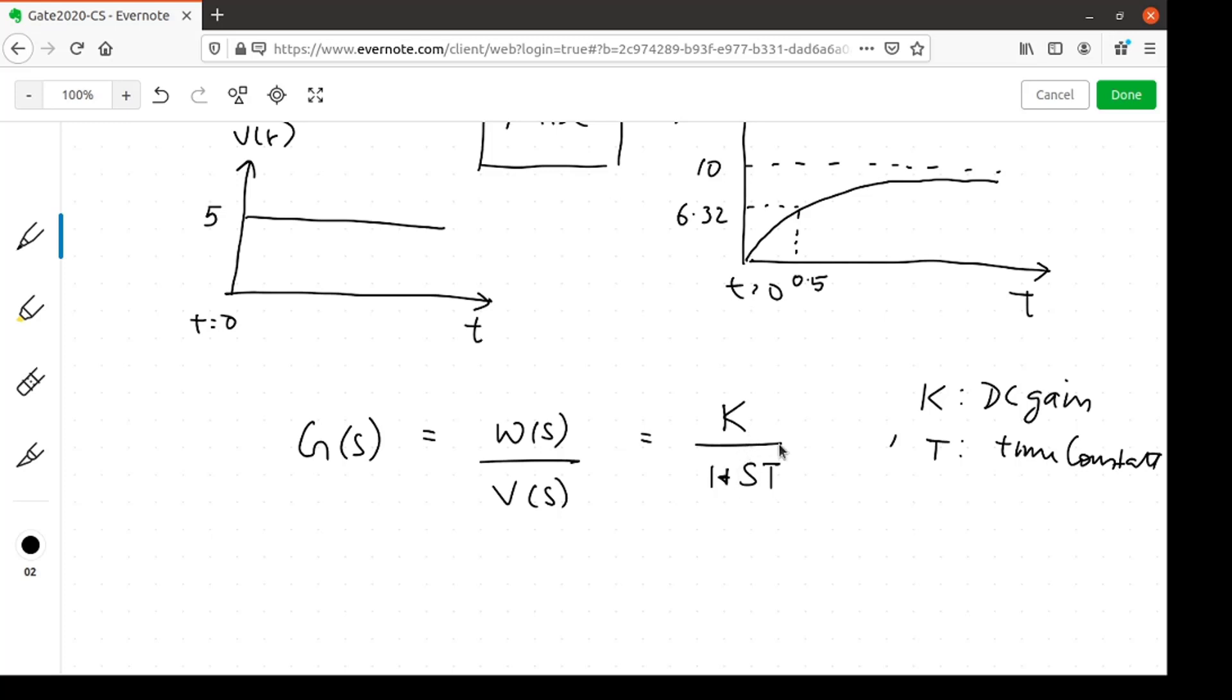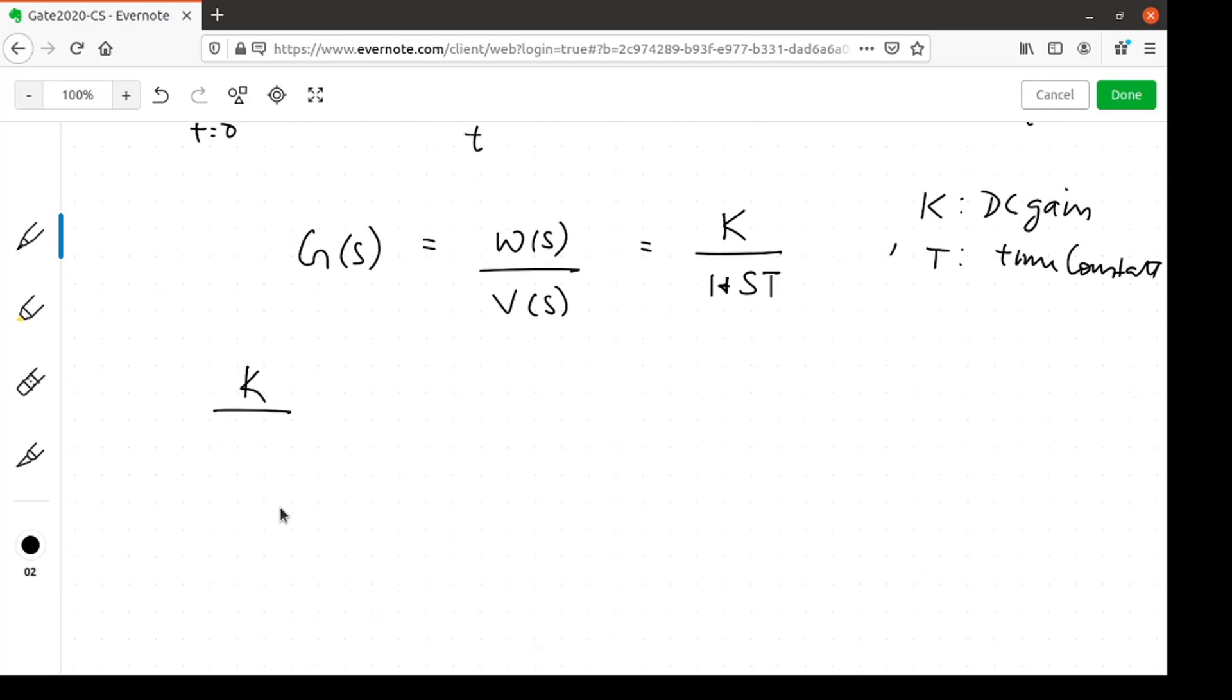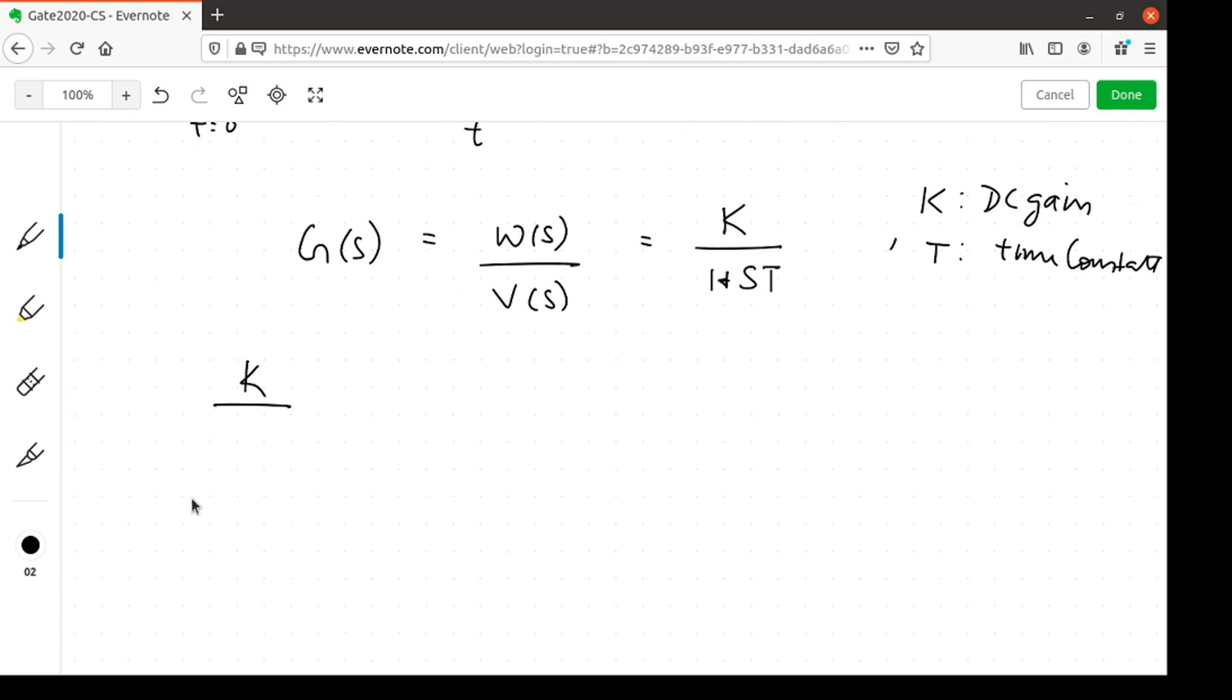Let's first calculate the DC gain. The definition of DC gain will be limit as t tends to infinity omega of t divided by v of t. Since it's a type 0 system, this will be equal to the final value of omega t which is 10, and the final value of v of t is 5 since it's a step input. So, the DC gain is 2.